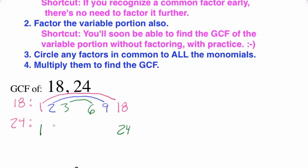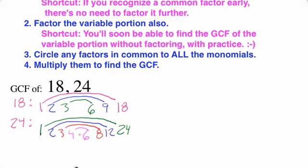Then we repeat the process with 24: 1 times 24, 2 times 12, 3 times 8, 4 times 6 — that bridges the gap, since 5 does not go into 24. So the entire list of factors of 24 is 1, 2, 3, 4, 6, 8, 12, and 24. In elementary school, you're asked to find the biggest number that appears on both lists. In this case, 6 is the greatest common factor.